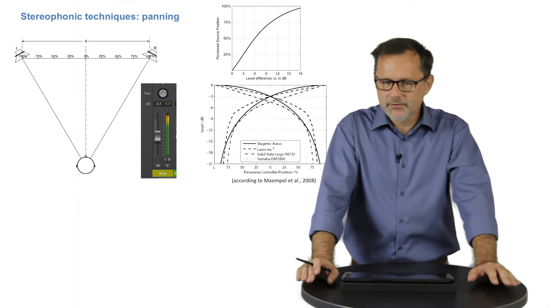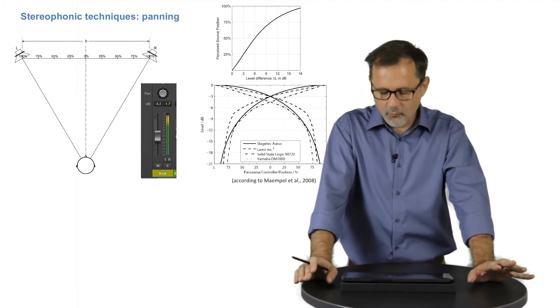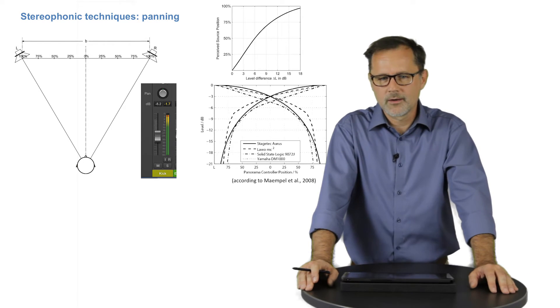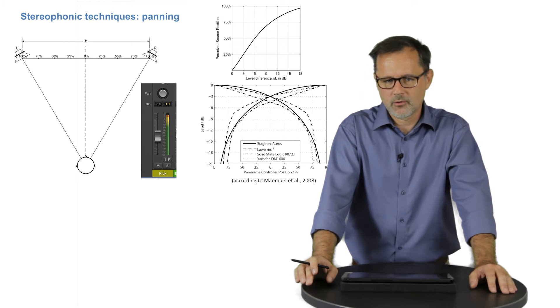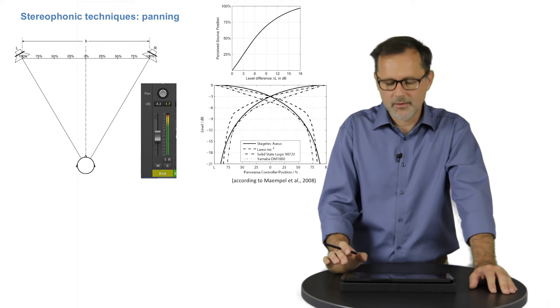But sometimes the attenuation is a little higher, something like four or four point five dB, assuming partly coherent signals from the loudspeakers.